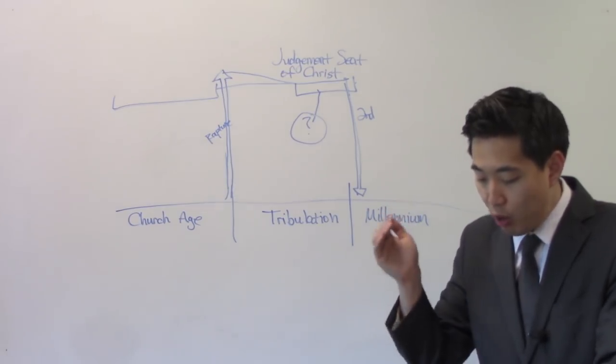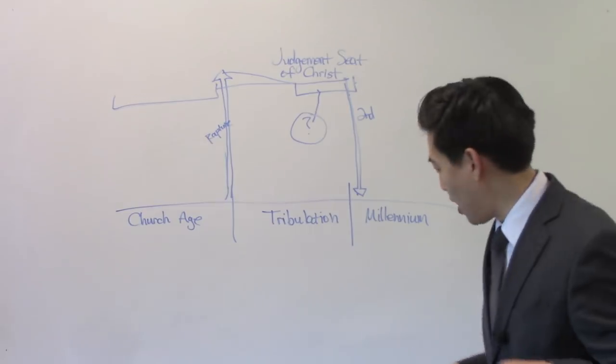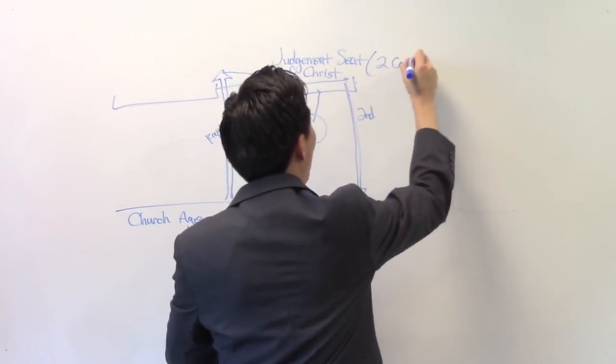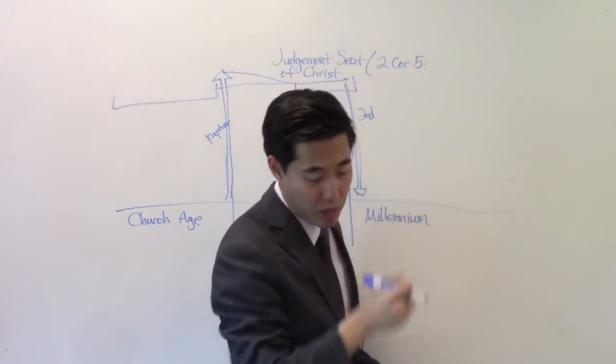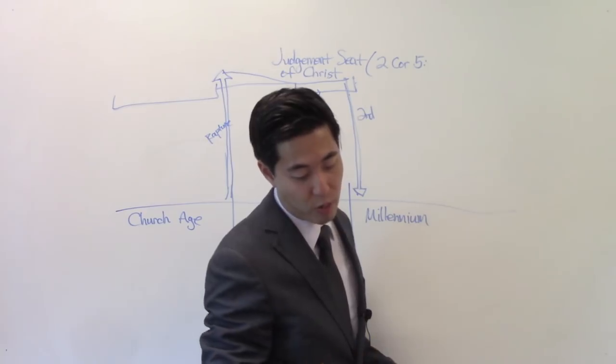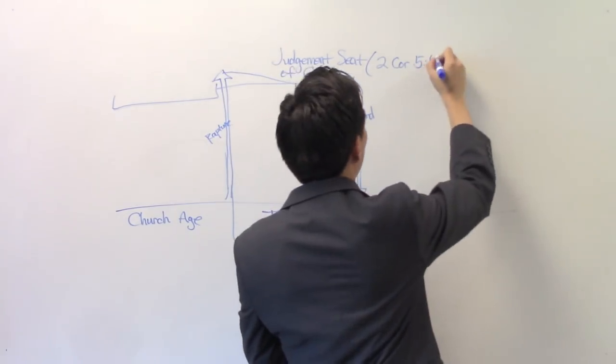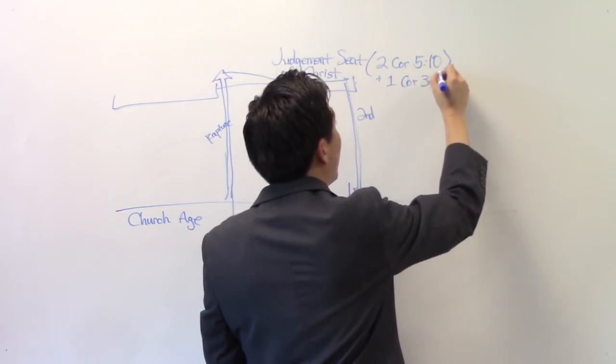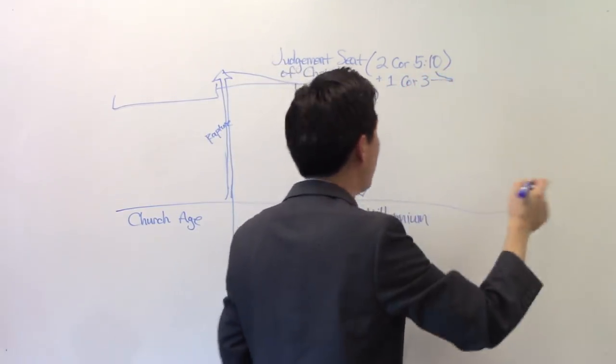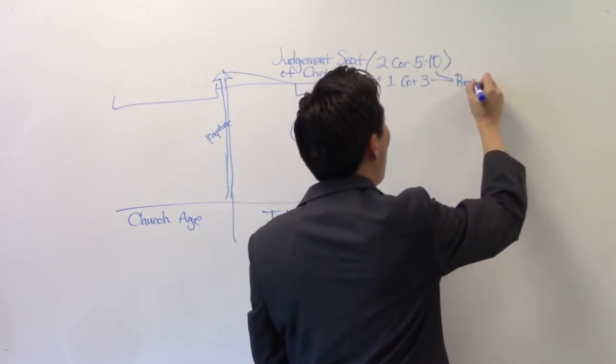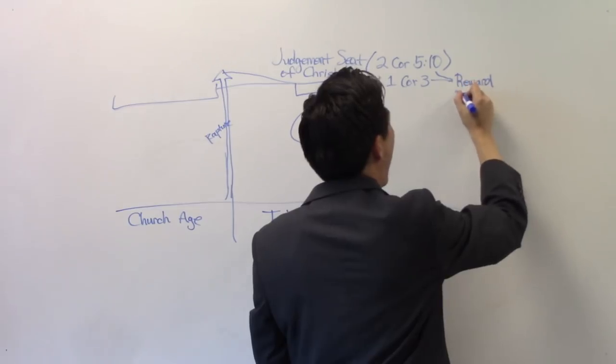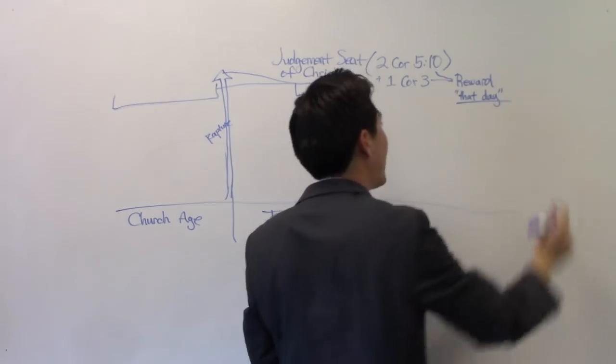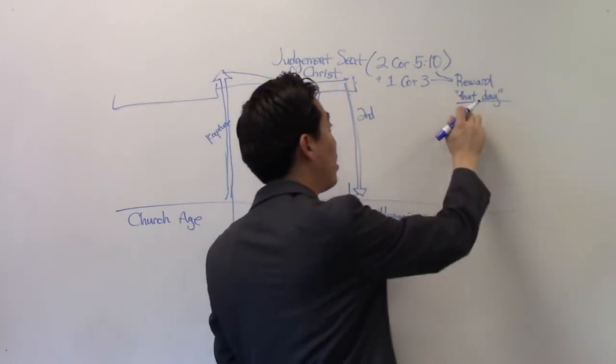Notice that we're going to go before the judgment seat of Christ. And in this judgment seat of Christ, that's when God gives us the reward. That's when God judges us and sees what kind of crowns that we get. Now, we're not going to turn there for time's sake. But 1 Corinthians 3 shows you more detail about the judgment seat of Christ. You can earn a reward.